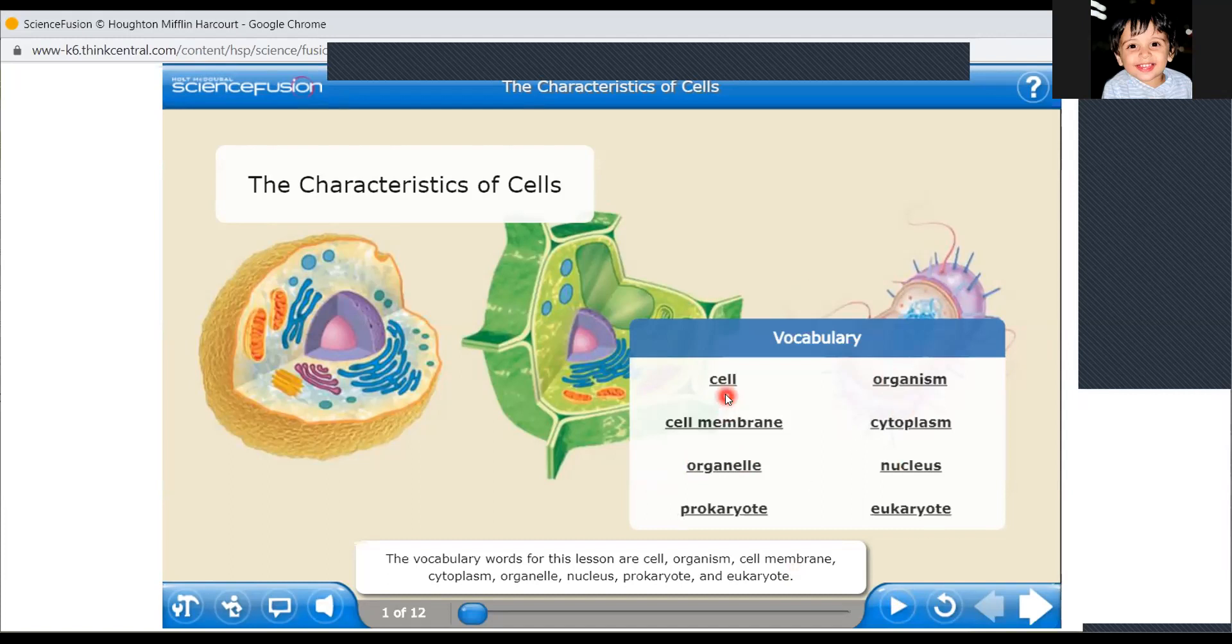We just were revising the vocabulary words. Cell. Come on, read it with me, Malak. Cell. Cell, organism, cell membrane, cytoplasm, organelle, nucleus, prokaryote, eukaryote. Okay.